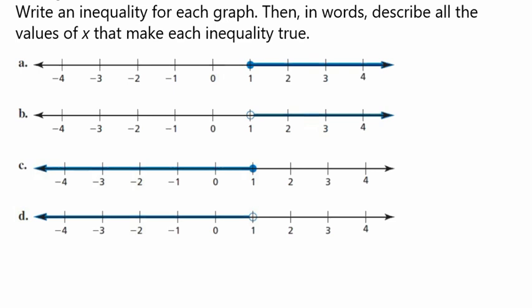Here we look at our first example, letter A, and we see that we have a closed circle. When we have a closed circle, that tells us that our answer is either going to be greater than or equal to, or less than or equal to. Let's review those symbols to make sure that we remember what we're talking about.